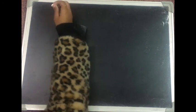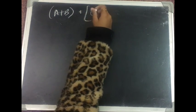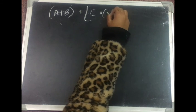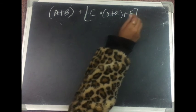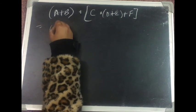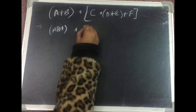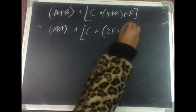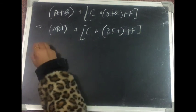Now suppose we have a more complex infix expression. We will first convert it to postfix and then see how to evaluate it using a stack. We start by solving the brackets. We get: c into d, then e plus — this part is solved — then plus f.